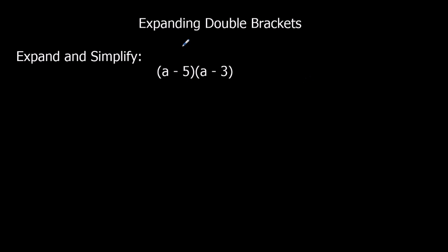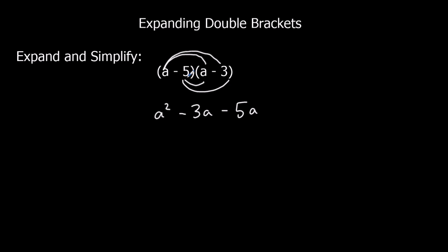This time we've got two negatives — it's going to be the same process. Multiply both the terms in the first bracket by both the terms in the second bracket. a times a is a squared. a times minus 3 is minus 3a. Minus 5 times a is minus 5a. And minus 5 times minus 3 — a negative times a negative gives a positive — so that's positive 15. Then simplify: minus 3 minus 5 is minus 8.